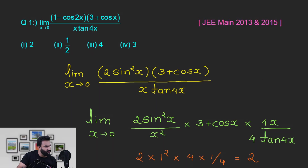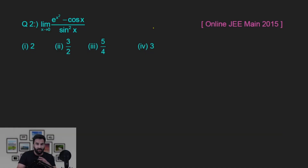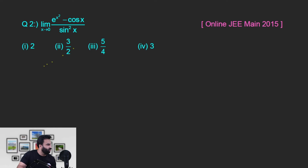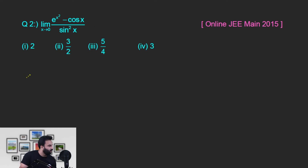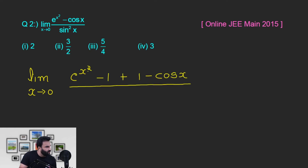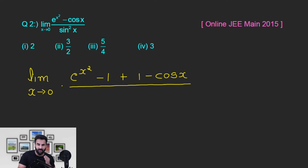We will go to the other problem. Our standard expression is e raised to power f(x) minus 1 upon f(x), provided that f(x) is tending to 0. So here I will add plus 1 or minus 1 in the numerator. Here f(x) is x square — the same thing we need to do in the denominator.